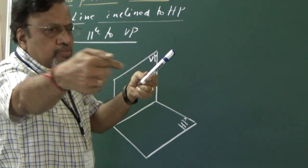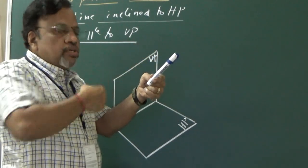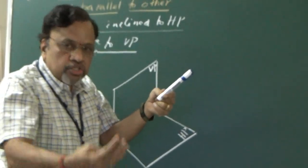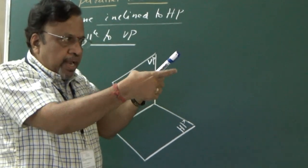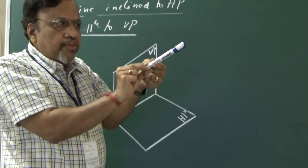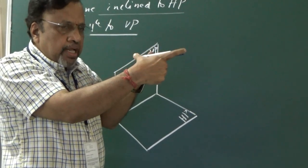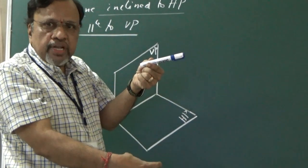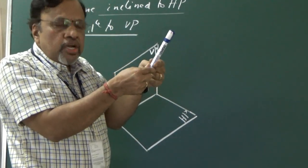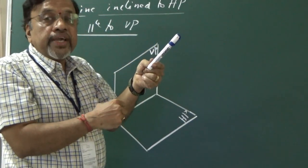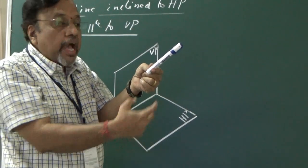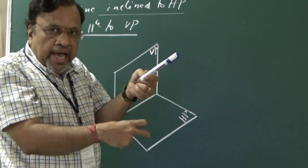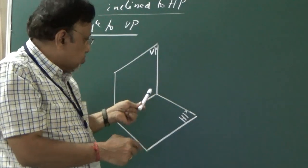Now let us look at the top view — the projection onto the horizontal plane. Since the line is inclined to HP, earlier when the line was parallel to HP you would see its true length in the top view. But now, since the line is inclined to HP, the line seen in the top view will be foreshortened. Not only that, that foreshortened line will also be parallel to the XY line. I will explain this using the illustration.